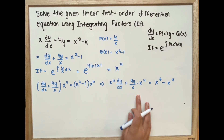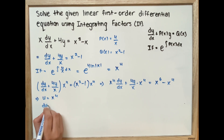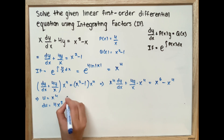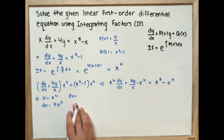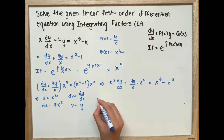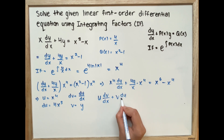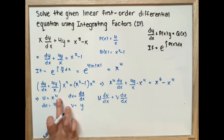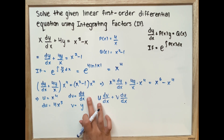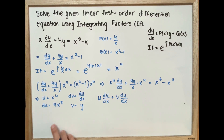Looking carefully at the left side, it is a product. If we set u equal to x to the power of 4, the derivative is 4x to the power of 3, and we set dv equal to dy over dx, so v is just y. We can write the left side in the form u times dv over dx plus v times du over dx, where u is x to the power of 4, v is y, and du over dx is 4x to the power of 3.